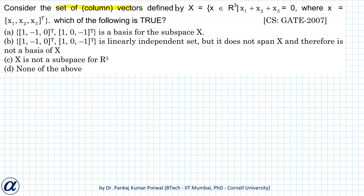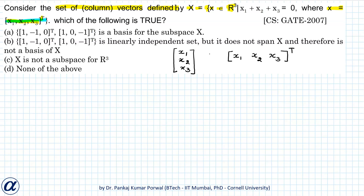In this question we are given a set of column vectors defined by x, belonging to three-dimensional real space, where x equals x1, x2, x3 transpose. Note that this notation is a more convenient, compact way of writing a column vector. A three-dimensional column vector written as a 3×1 matrix can instead be written as a 1×3 row vector x1, x2, x3 and then transposed.